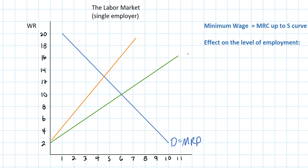The green line in our graph represents the supply of labor. The upward sloping supply of labor shows that at higher wage rates more households are willing to work in this market.